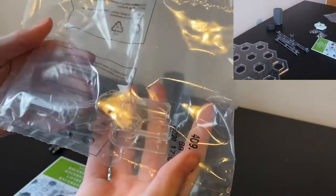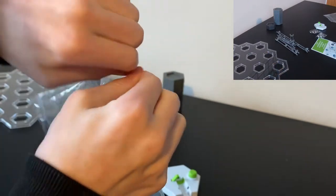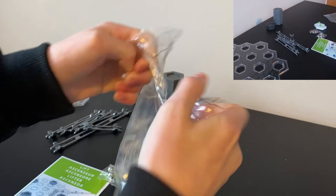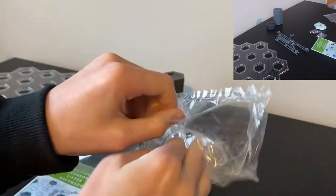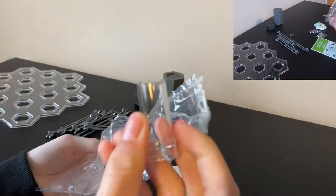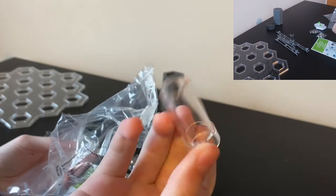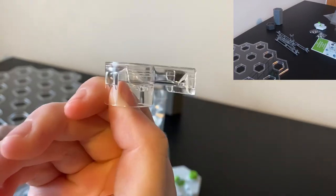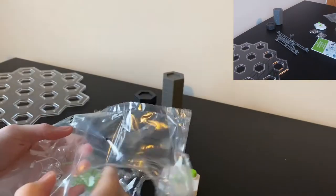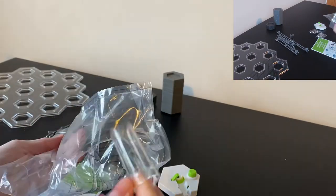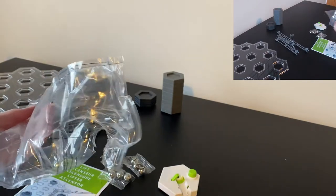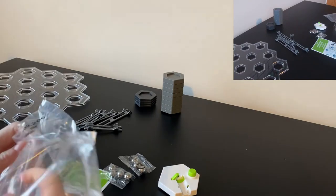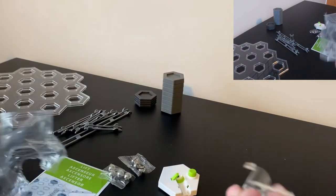Next we have the transparent bits that are for the lifter. So we have two of these tube-like things, this is the top bit, another one of the tubes, and the base.